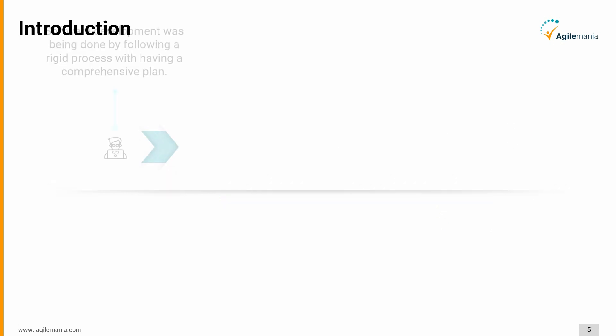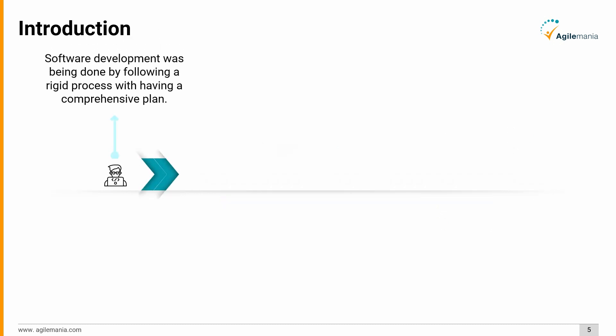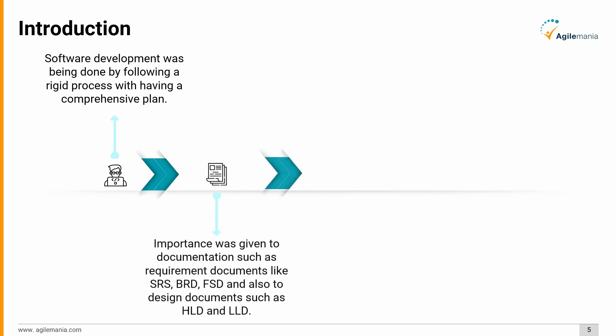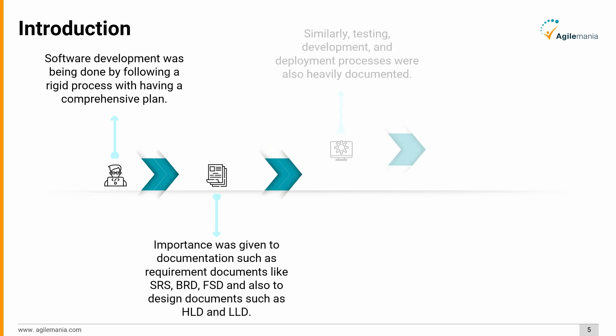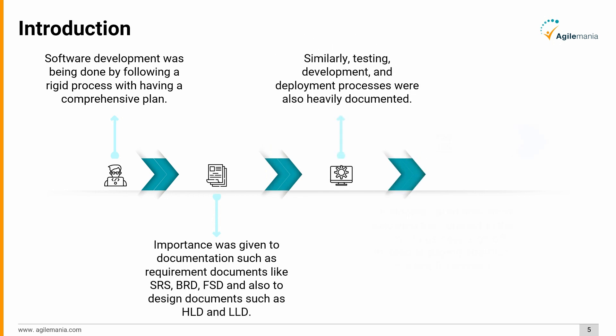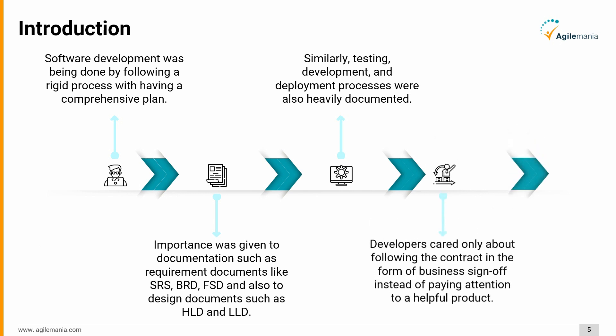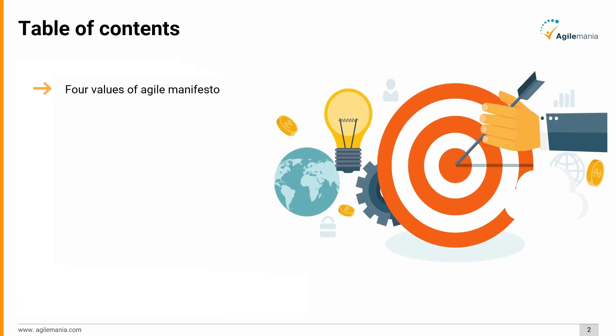Software development was being done by following a rigid process with a comprehensive plan. Importance was given to documentation such as requirement documents like SRS, BRD, FSD, and also to design documents such as HLD and LLD. Testing, development, and deployment processes were also heavily documented. Developers cared only about following the contract in the form of business sign-off, instead of paying attention to delivering a helpful product.